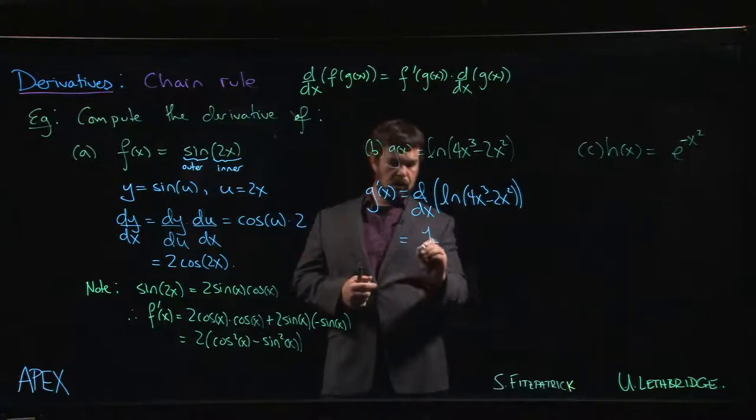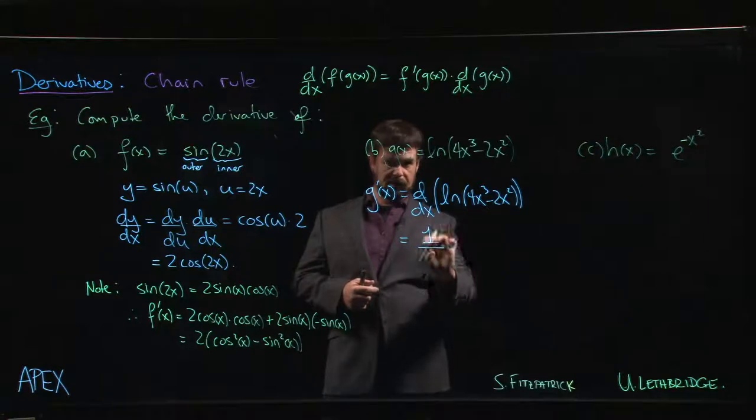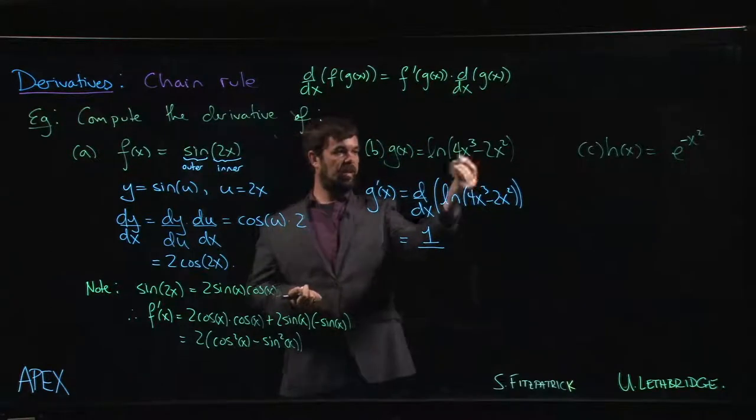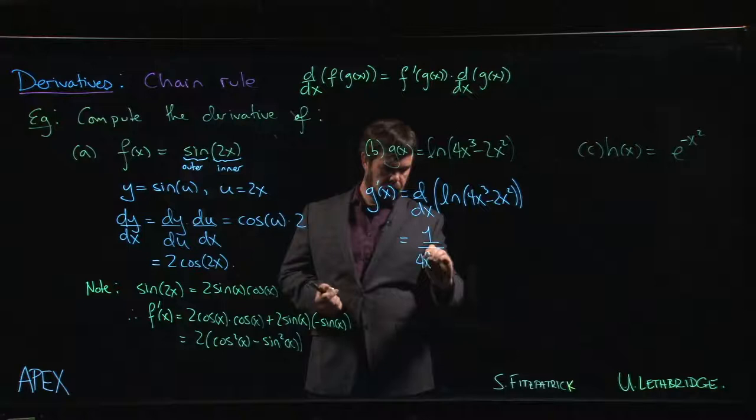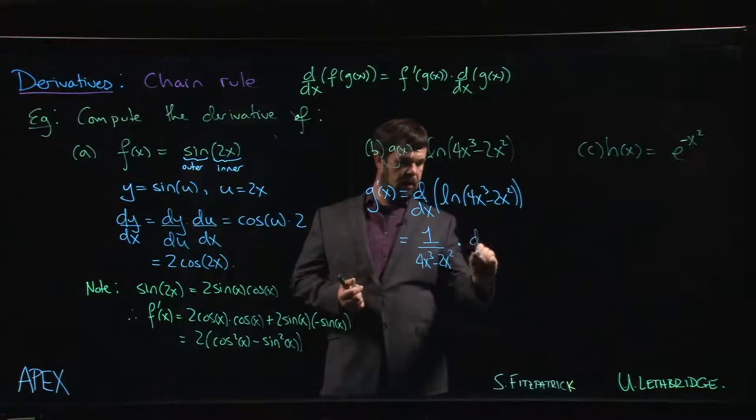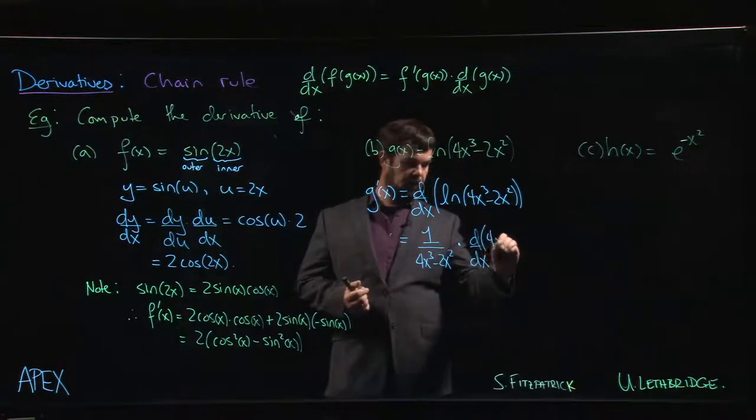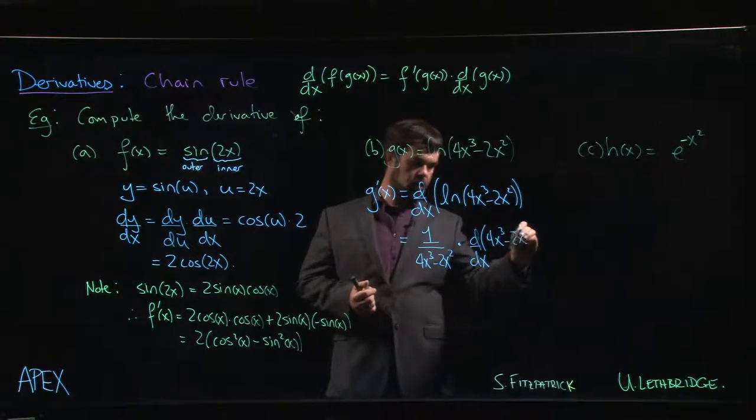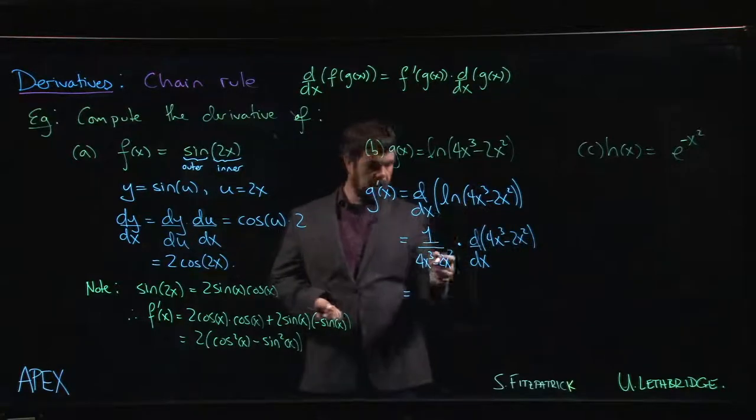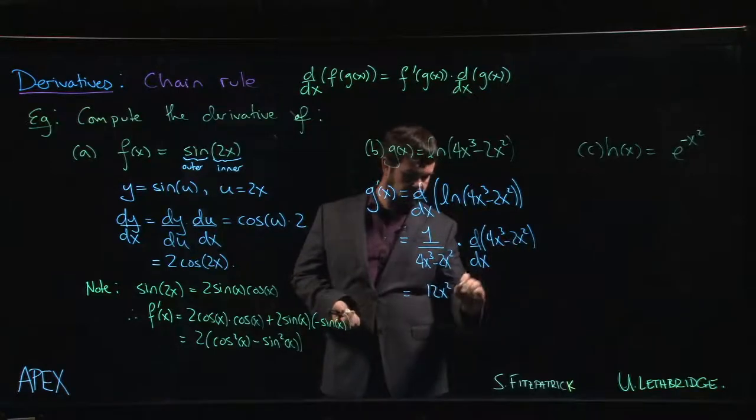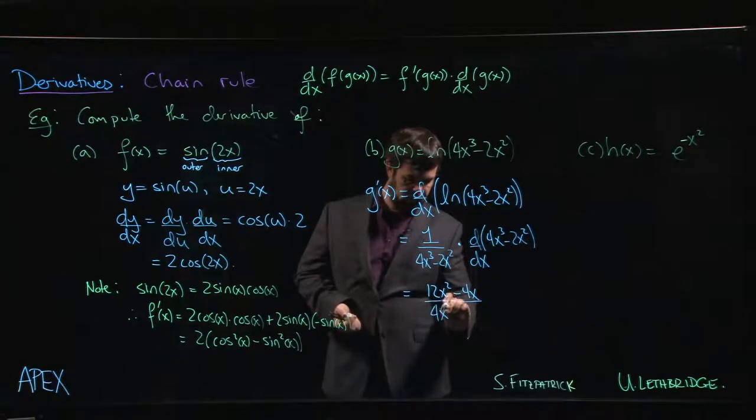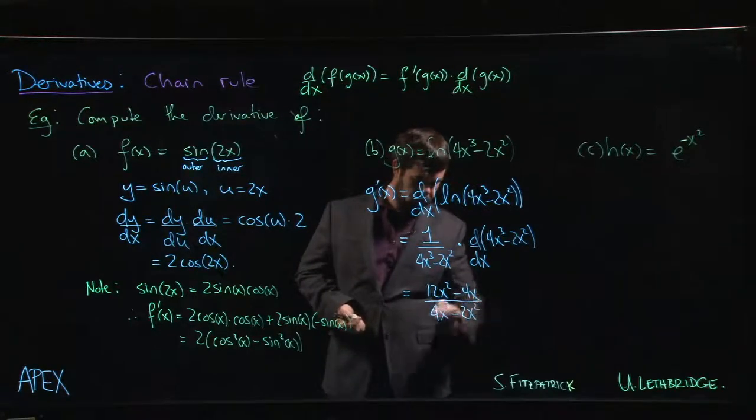Okay, so 1 over, well, it's 1 over, it's not 1 over x. It's 1 over whatever was inside the logarithm. So it's 1 over u, if you like, where in this case u is 4x cubed minus 2x squared. And then we need to multiply by the derivative of what's inside, 4x cubed minus 2x squared. So finally, take that derivative. We might as well put it in the numerator. So we get 12x squared minus 4x over 4x cubed minus 2x squared.